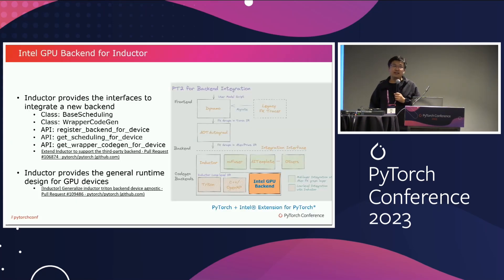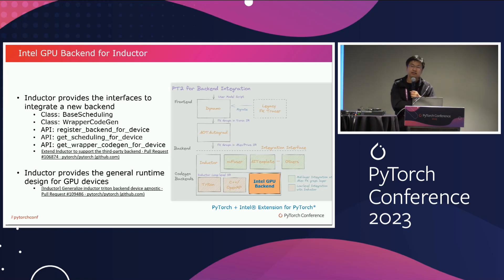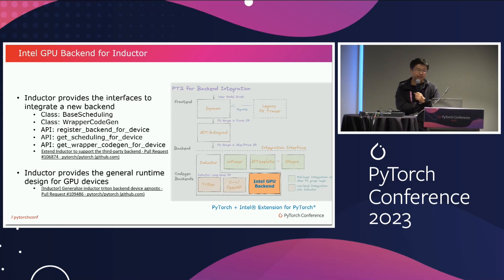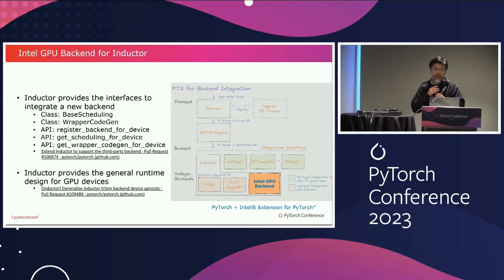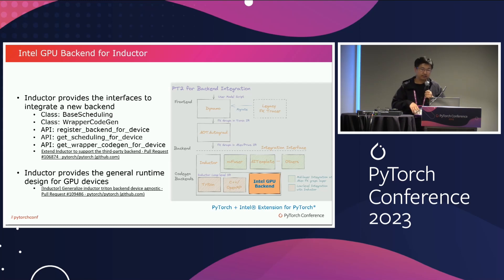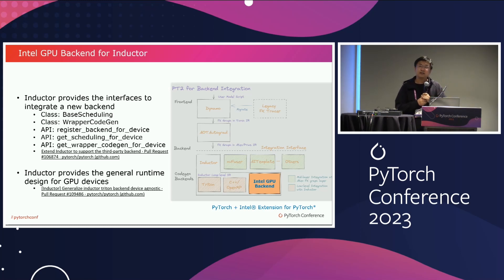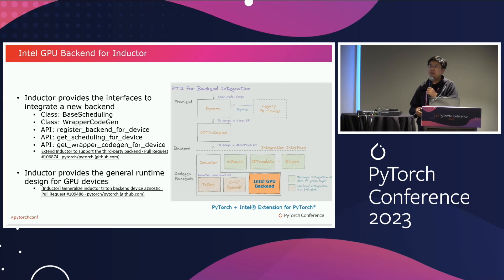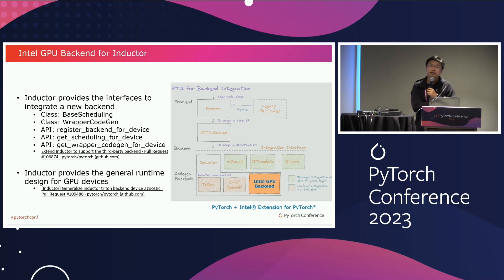PyTorch 2.0 has provided the integration methodology to integrate a new back-end at the Dynamo level, so a new back-end could be a Dynamo back-end. Dynamo passes the captured FX graph to the new back-end, and the new back-end can decide how to process the captured graph. But Intel GPU back-end integrates with the torch.compile at the inductor level. The motivation for choosing this solution is because we want to reuse most of the functionalities and optimization passes of inductor.